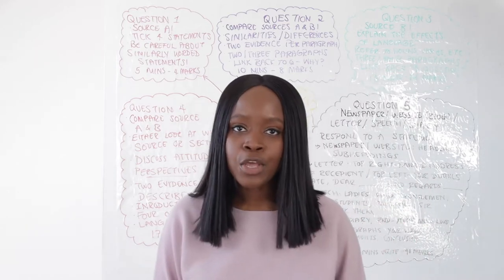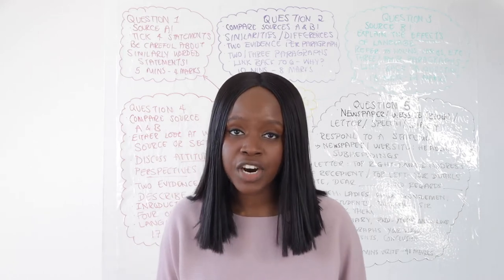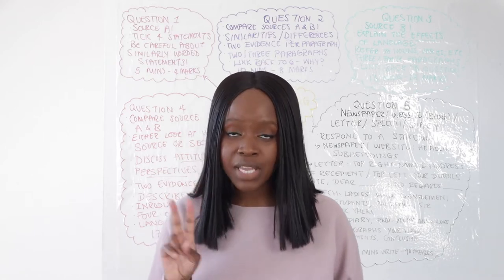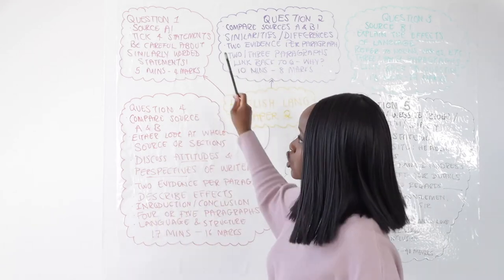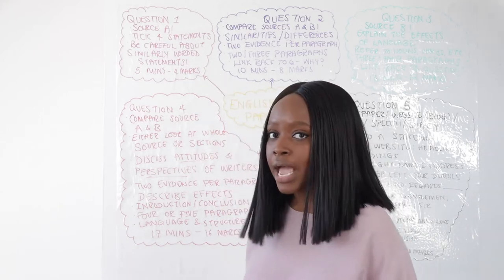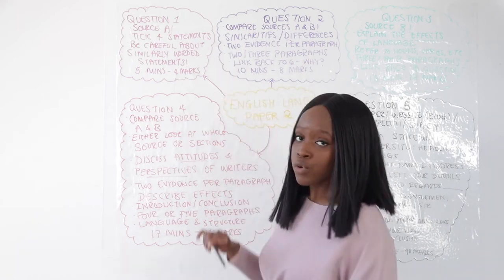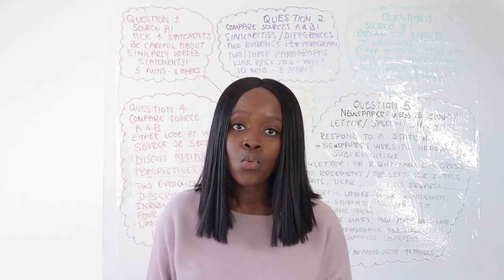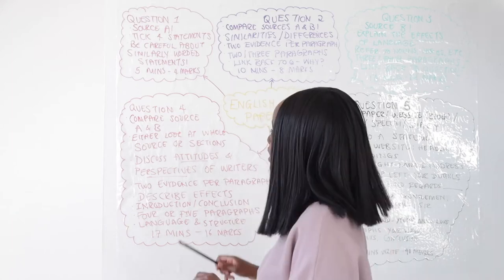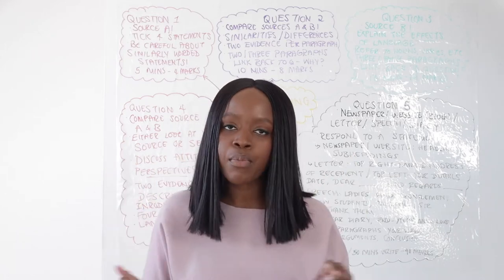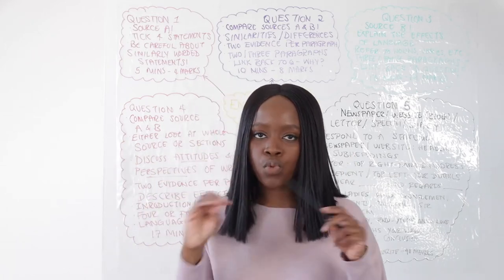For this paper you always have two extracts that you're going to be expected to write about. Source A is always a nonfiction modern extract, and source B is always a Victorian extract written in the 1800s. For question 1 you're only asked to look at source A, the modern extract, and you tend to just get a range of statements where you're only expected to pick out four statements which are true.